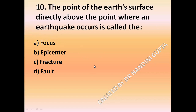Question 10: The point on the earth's surface directly above the point where an earthquake occurs is called — option A, focus; option B, epicenter; option C, fracture; option D, fault. The correct answer is epicenter.